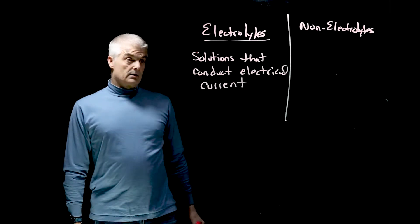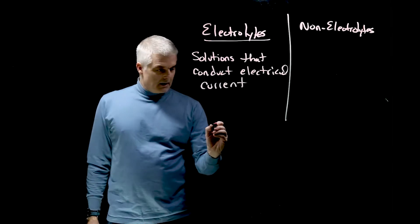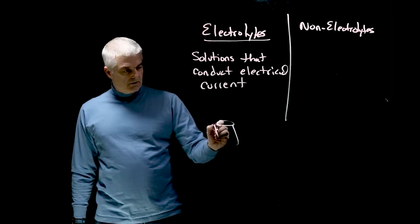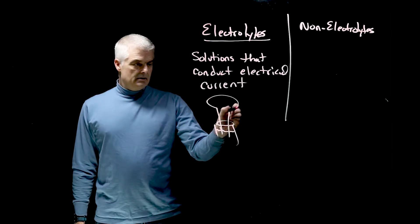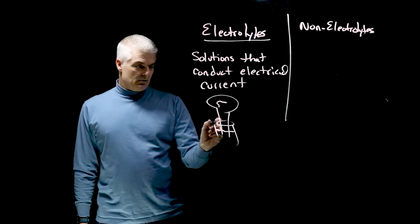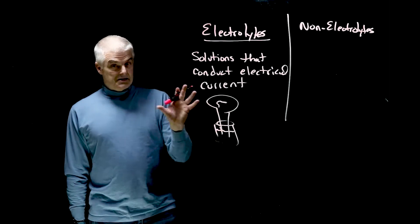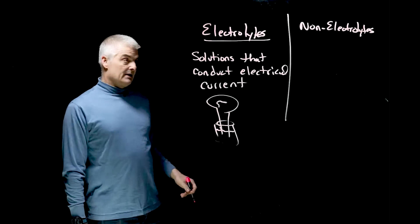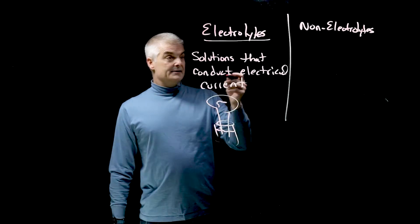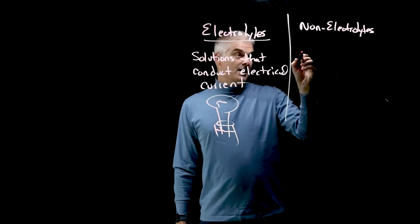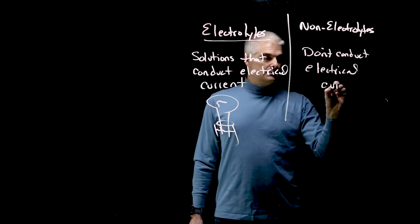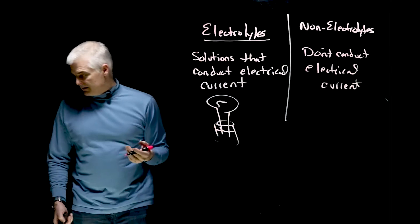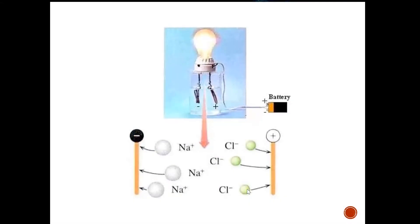So if you take like a beaker filled with a solution that's an electrolyte and you put in there like two pieces of wire and a light bulb, you know, and you plug the light bulb in, the light bulb lights up. We'll do this in class, that's pretty awesome. And a non-electrolyte, you'll probably figure this out, they don't conduct an electrical current.